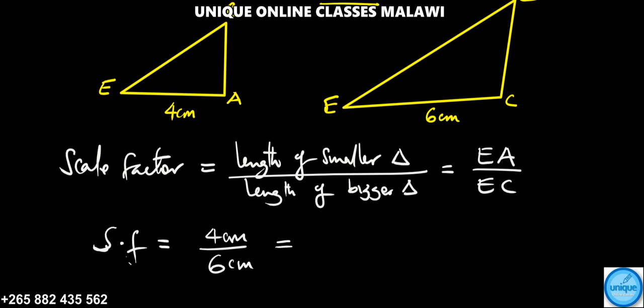So if we simplify this one further, centimeters cancel, 4 simplifies to 2 and 6 simplifies to 3. So 2/3, that's our scale factor.